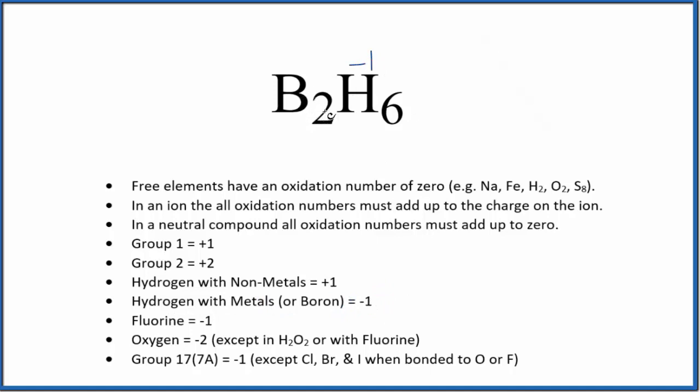We can pretty easily figure out what the boron should be in B2H6, because all the oxidation numbers add up to zero. So we have 6 times negative 1, that's negative 6. The boron has to be a positive 3. 2 times positive 3, that's plus 6, and we have negative 6. Everything adds up to zero.